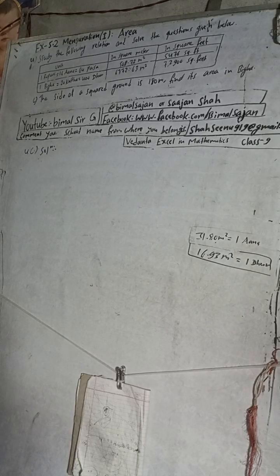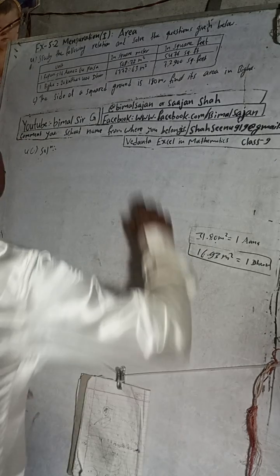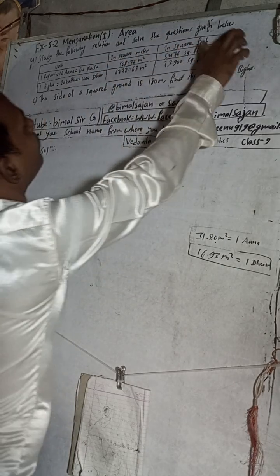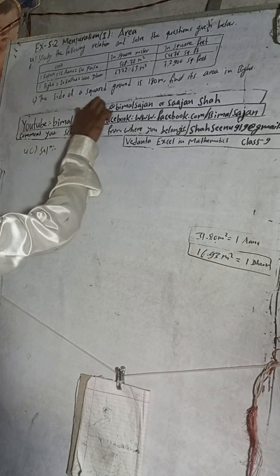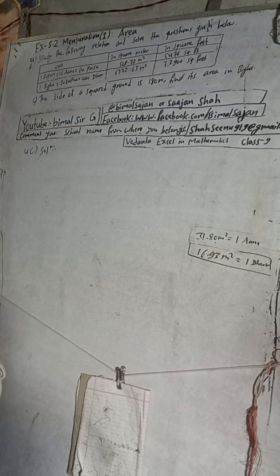Hi Class 9 and 10 students, welcome back to Bimal Sir's YouTube channel. This is question number 4c, Exercise 5.2, Mensuration. The question is: study the following relation and solve the questions given. You can see the relation. The side of the square ground is 180 meters.